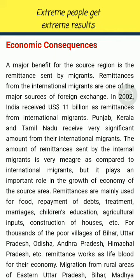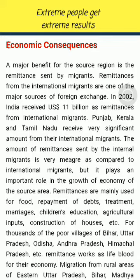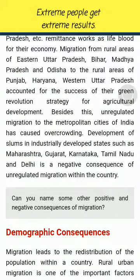Economic Consequences. A major benefit for the source region is the remittances sent by migrants. Remittances from international migrants are one of the major sources of foreign exchange — in 2002, India received $11 billion as remittances. Punjab, Kerala and Tamil Nadu receive very significant amounts from their international migrants. Remittances are mainly used for food, repayment of debts, medical treatment, marriages, children's education, agricultural inputs and construction of houses, and act as lifeblood for thousands of poor villages in Bihar, Uttar Pradesh, Odisha, Andhra Pradesh and Himachal Pradesh. Migration from rural areas of eastern Uttar Pradesh, Bihar, Madhya Pradesh and Odisha to rural areas of Punjab, Haryana and western Uttar Pradesh also accounted for the success of their Green Revolution strategy.